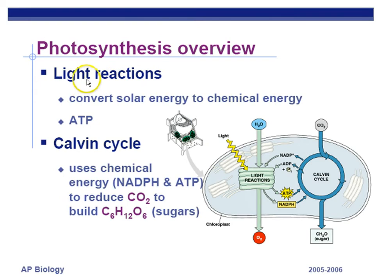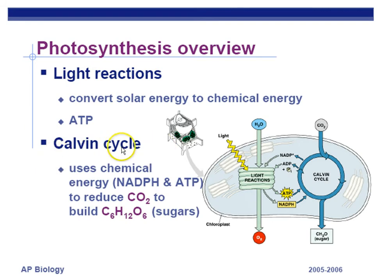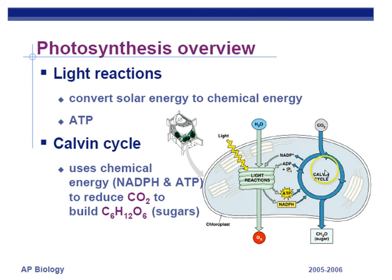Make sure you know this diagram. Light reactions — also called light-dependent reactions — depend on light. The Calvin cycle — also called light-independent or dark reactions — doesn't require light. The light reactions take light energy, split water for electrons, and through photosystem 2 and photosystem 1 make ATP and NADPH. NADPH is a reduced molecule that also has energy to drive the Calvin cycle.